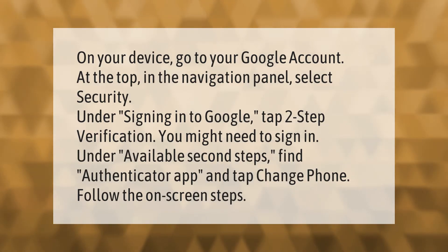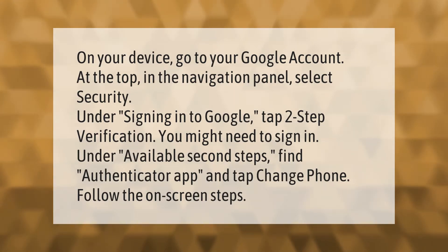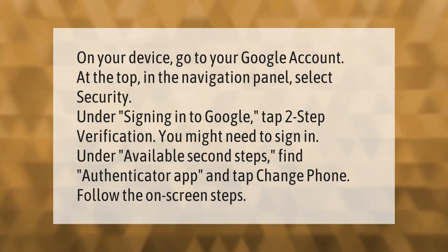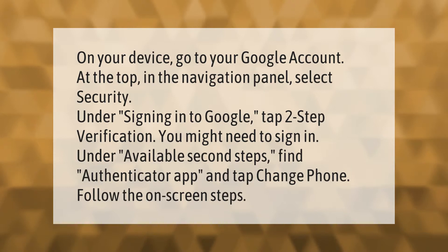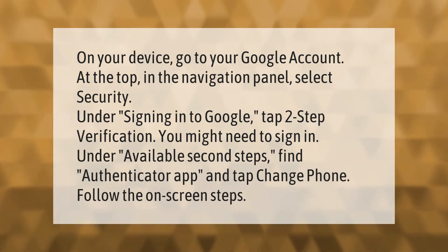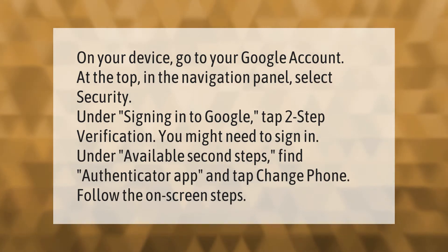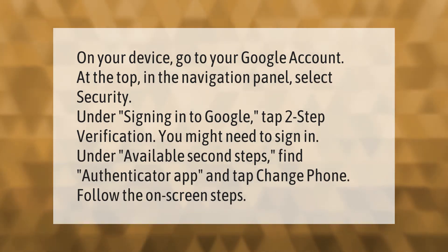On your device, go to your Google account. At the top in the navigation panel, select Security. Under 'Signing into Google,' tap Two-Step Verification — you might need to sign in. Under available second steps, find Authenticator App and tap 'Change Phone.' Follow the on-screen steps.